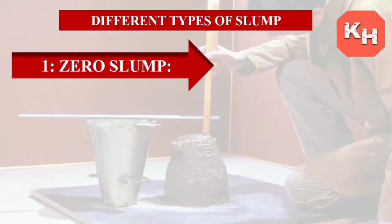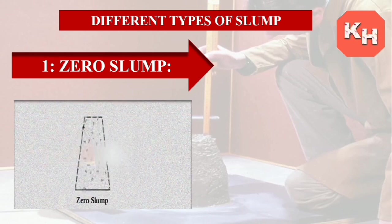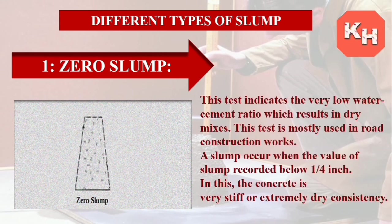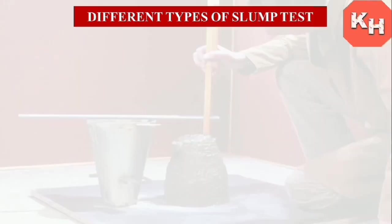Now we check the different types of slump. Zero slump: This indicates a very low water-cement ratio which results in dry mixes. This type is mostly used in road construction works. Zero slump occurs when the slump value recorded is below 1/4 inch — the concrete has very stiff or extremely dry consistency.